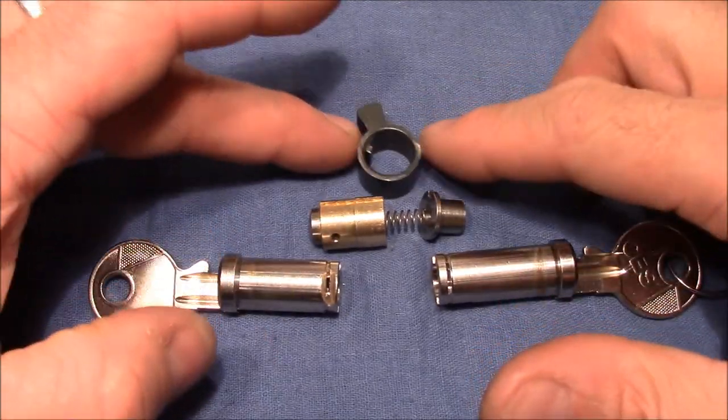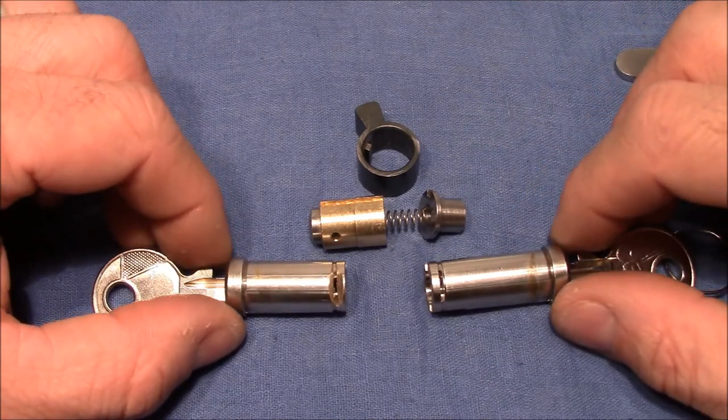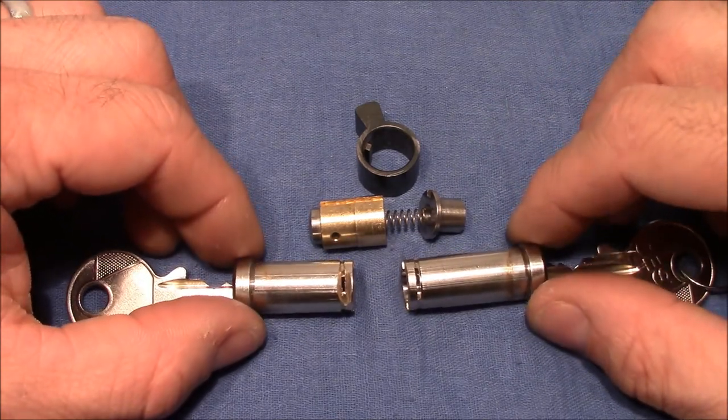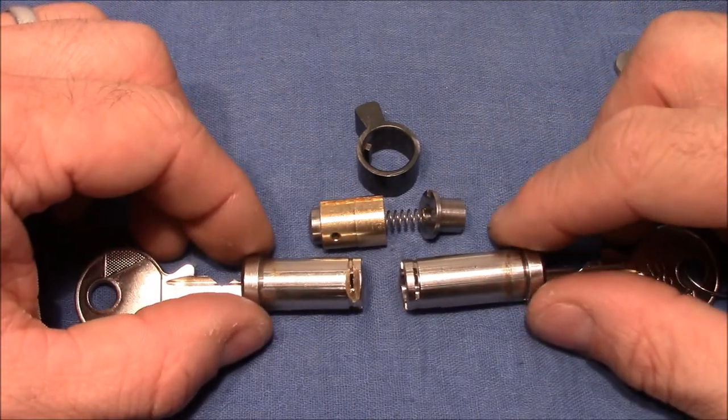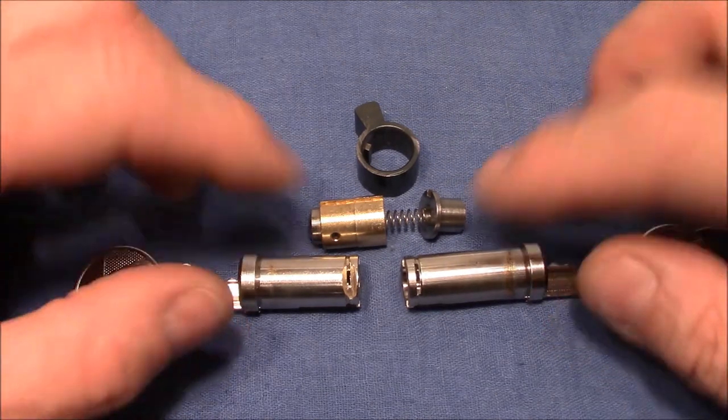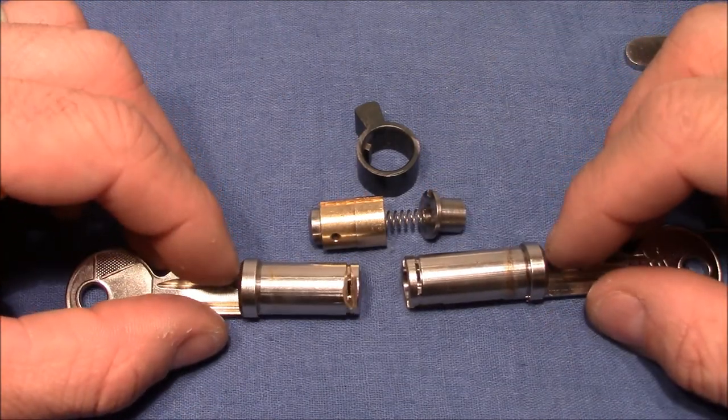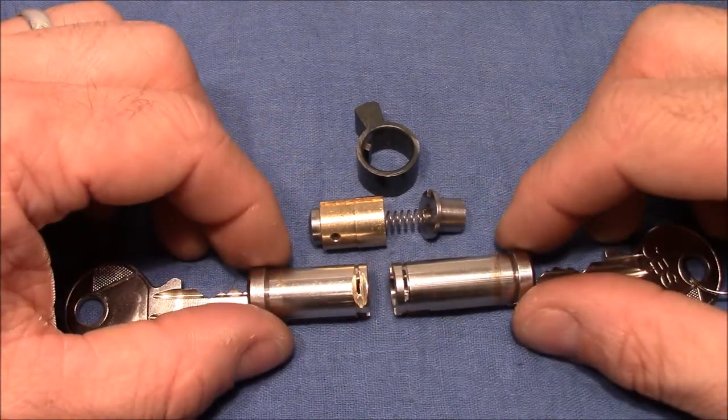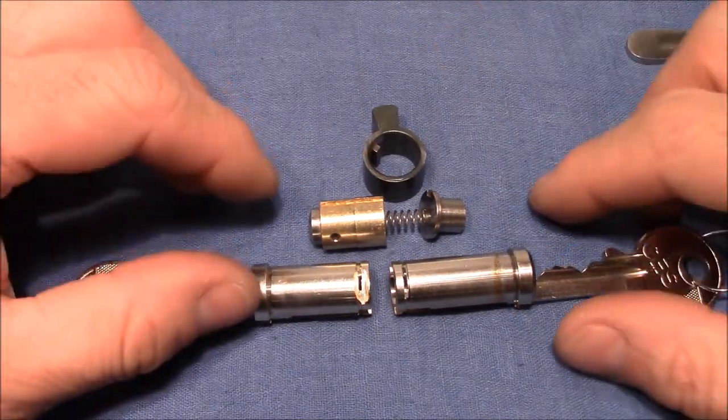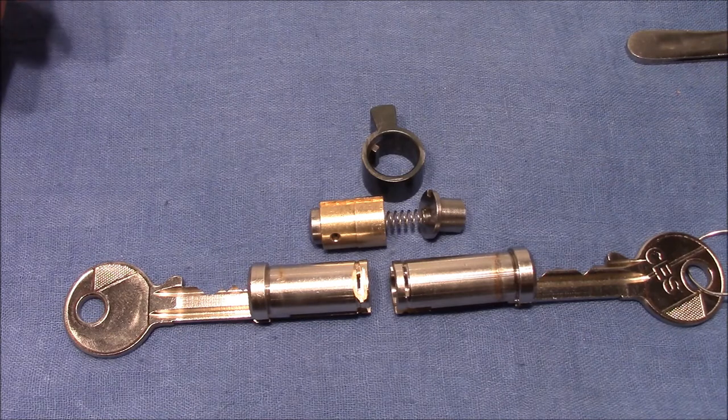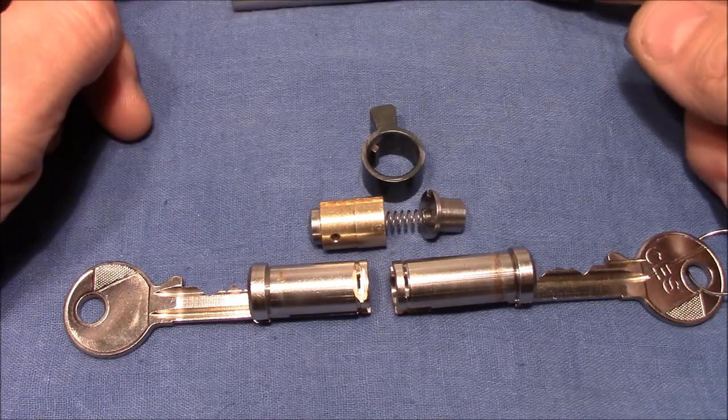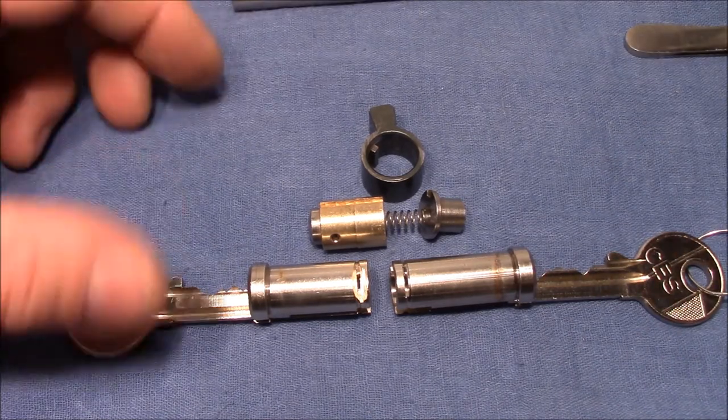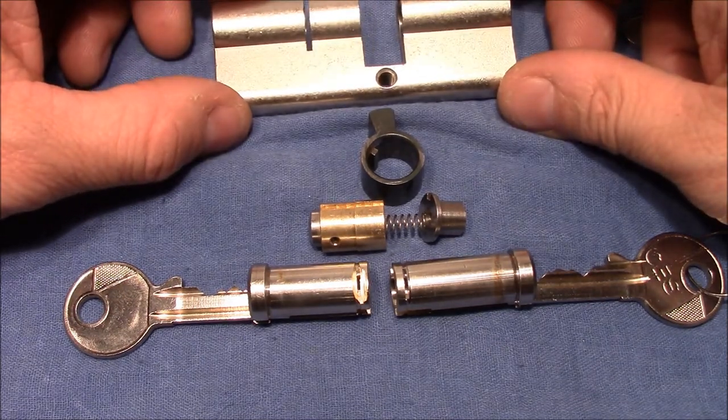Yeah very very smart mechanism, very simple, very robust. Actually I like this a lot more than the complex mechanism of the Winkhaus that I showed you in my last video with the many different small pieces and springs. Yeah so that was the CES lock picked and gutted and cam mechanism explained. Alright thanks for watching, happy picking, bye bye.